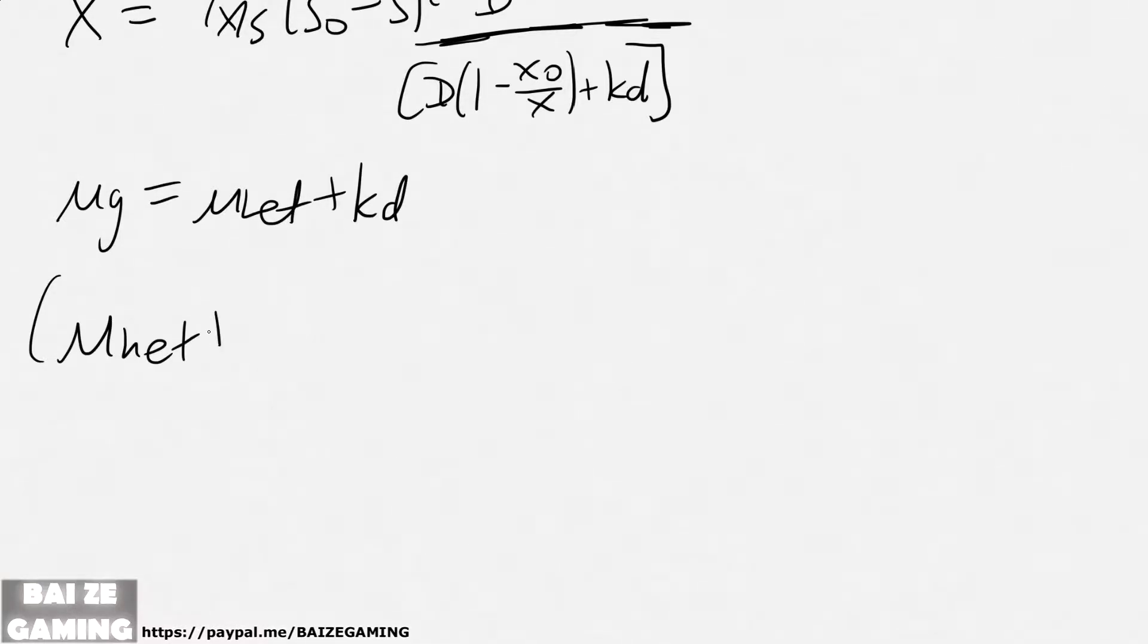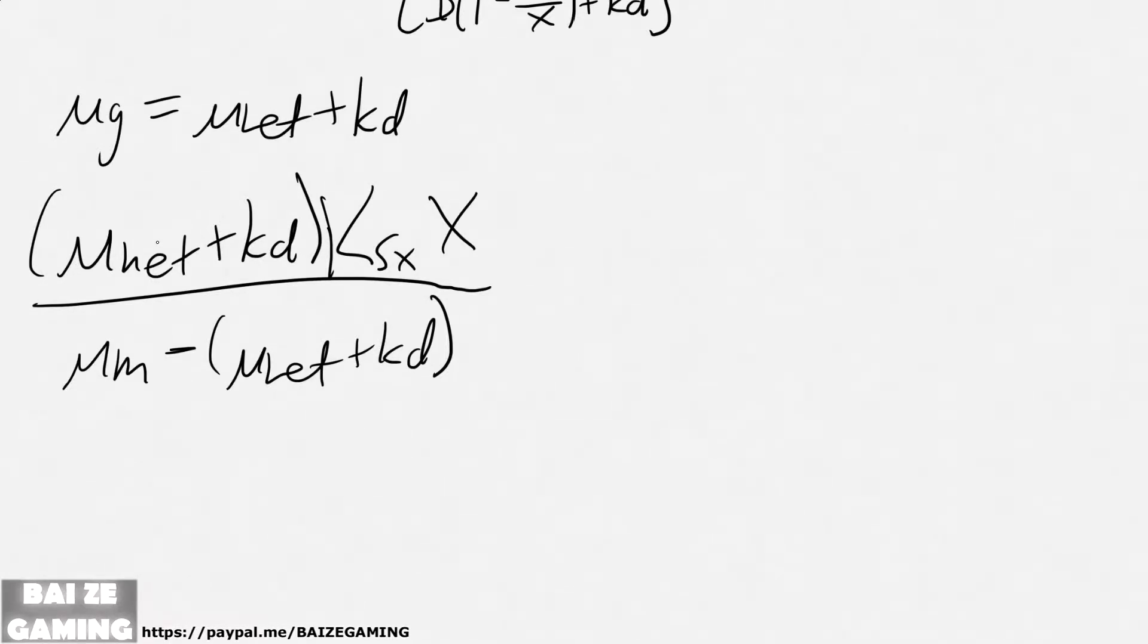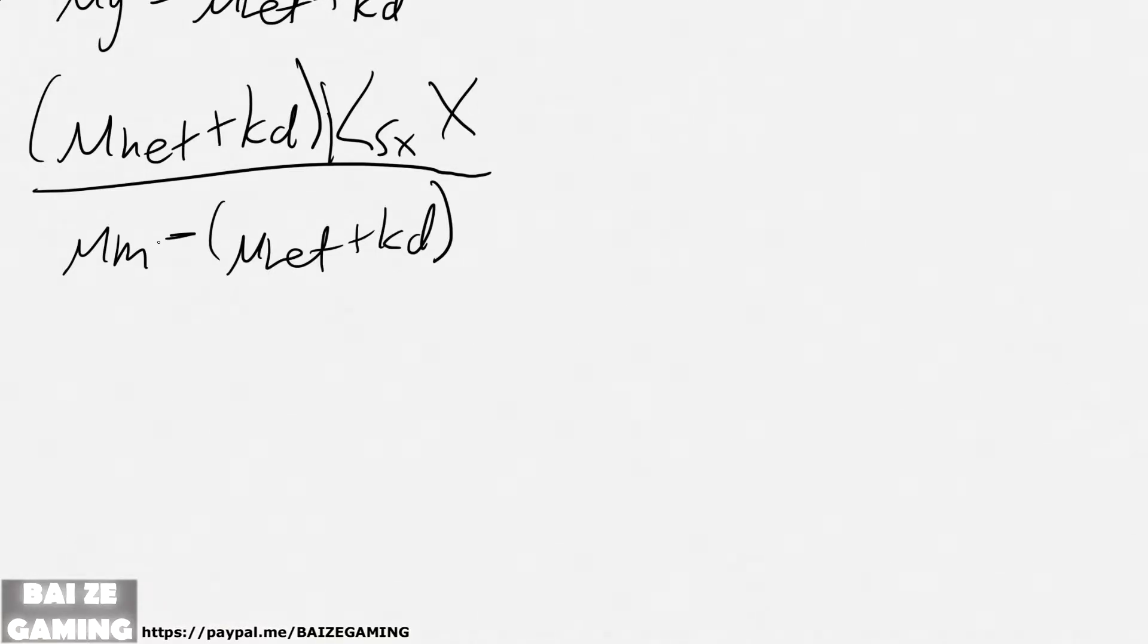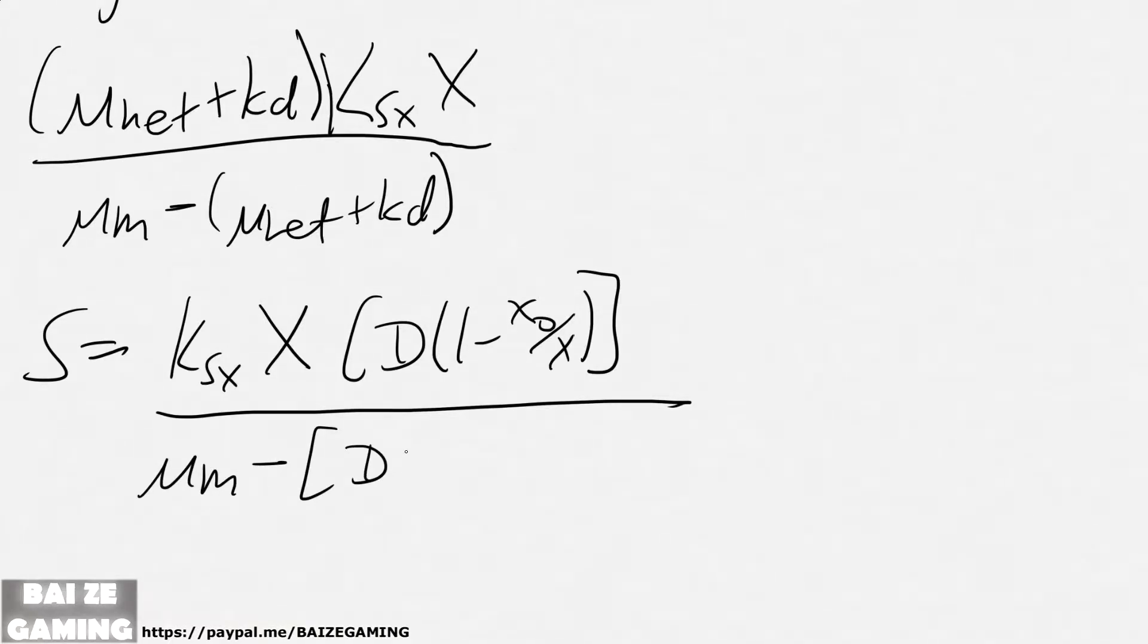When we substitute in that equation, and then we can substitute in what we found for μₙₑₜ earlier. So then let's just say S equals that constant plus kₛₓ times X.